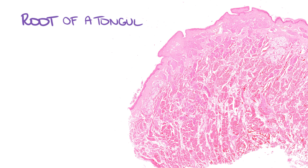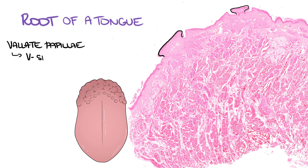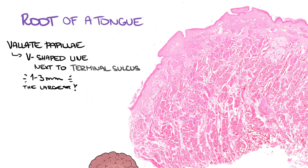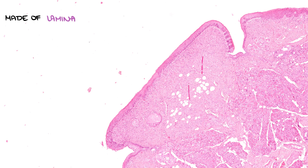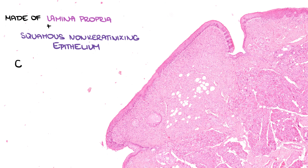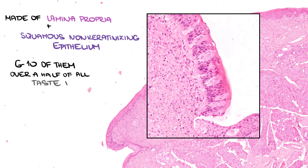We'll move on to the next section, which is the root of the tongue. We can find velate papillae in this region. They form a V-shaped line just next to the terminal sulcus. With a diameter of 1–3 mm, they are the largest papillae of the tongue. Structurally, they are made of lamina propria and squamous non-keratinizing epithelium. Velate papillae are the least abundant type, with only 6 to 10 of them, but they contain over half of all taste buds on the tongue.